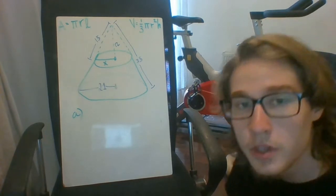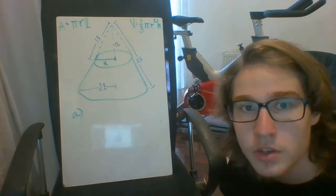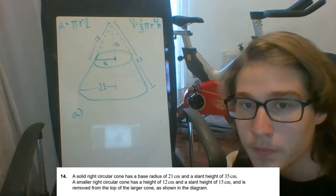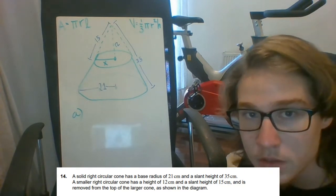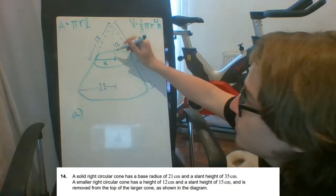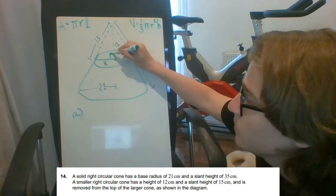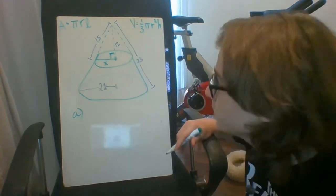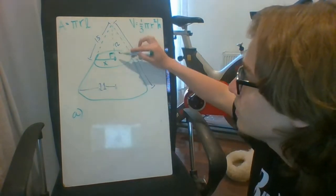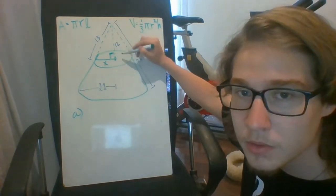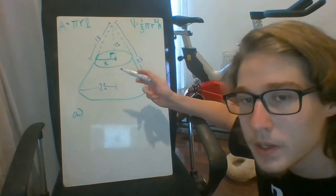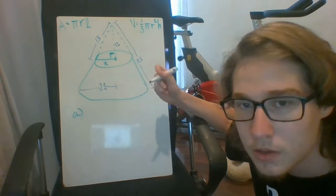Now we have to use all the information they give us and read carefully. They tell us that we have a solid right circular cone. If they tell us that it's a right circular cone, that means there's a right angle right here. So that's a key word you have to watch out for. And if you see here, there's actually a triangle that forms. And every time you see a right triangle, you want to start thinking of Pythagorean theorem.